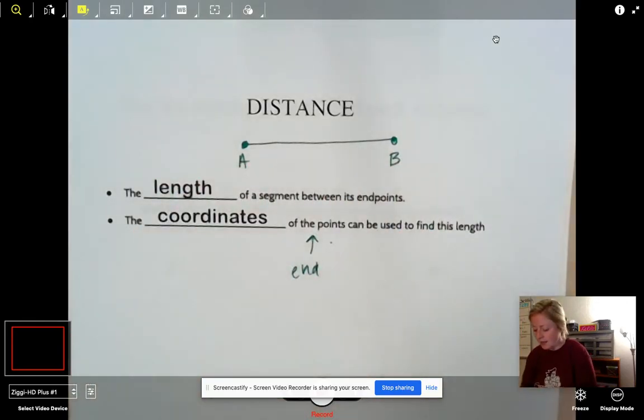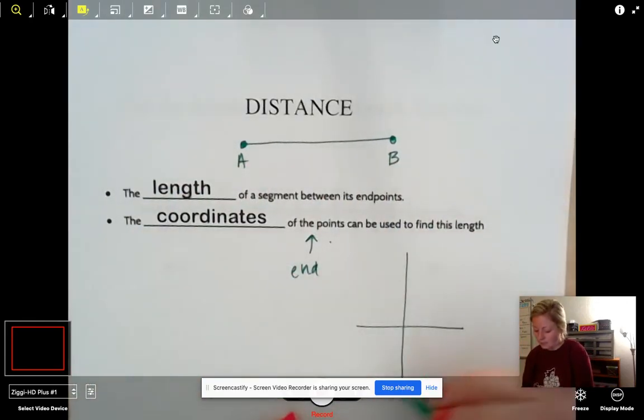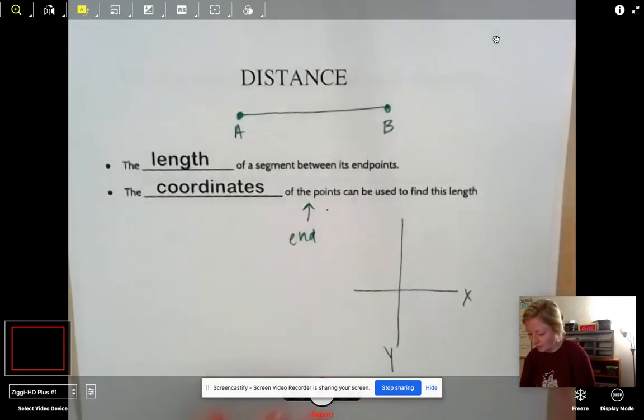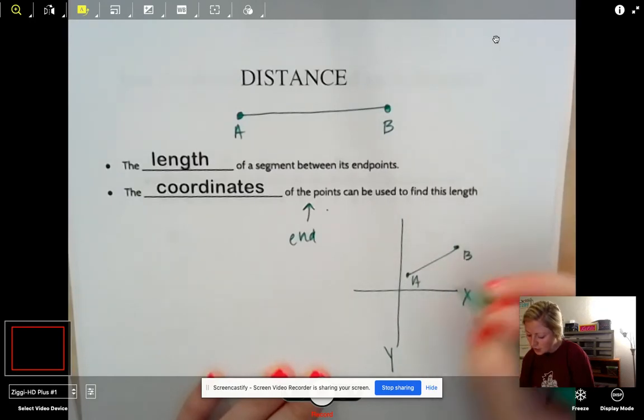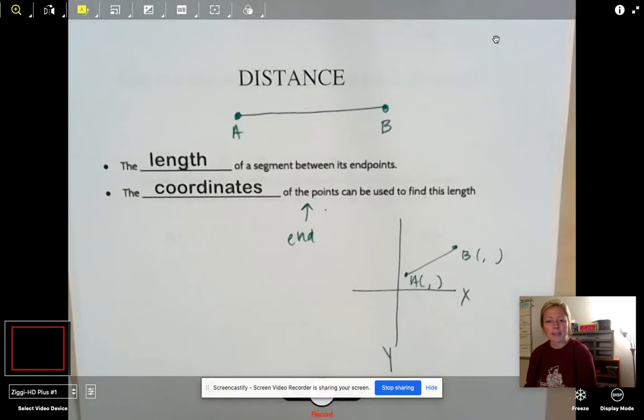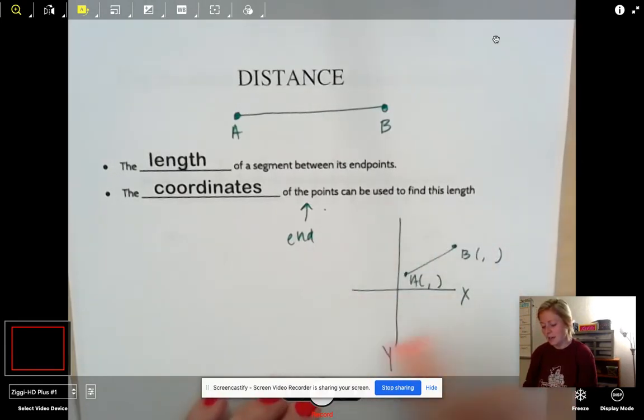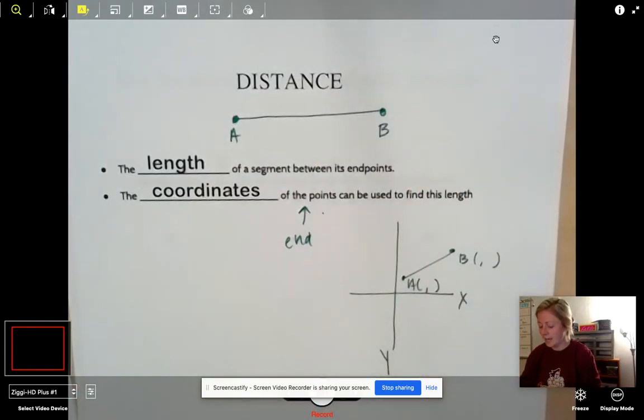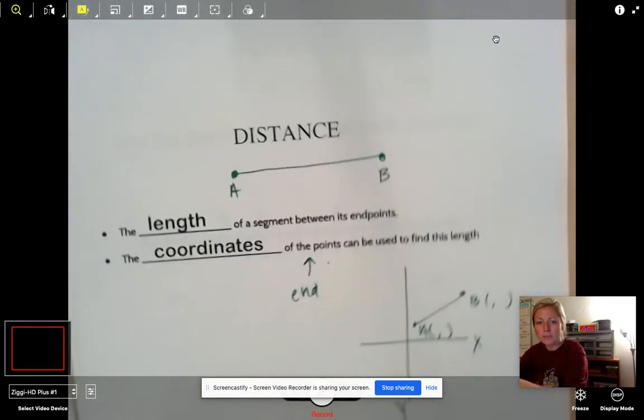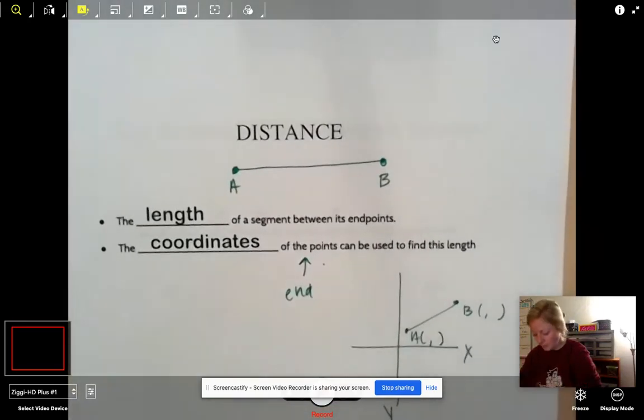So if this was on like an XY graph, right? Let's say A was here and B was there. We would use their ordered pairs to find the distance of that because it's not as easy as counting when it's on a coordinate plane, whereas if it was just on like a number line. We'll see exactly what I'm talking about on the next slide. Shimmy this back down. Perfect.